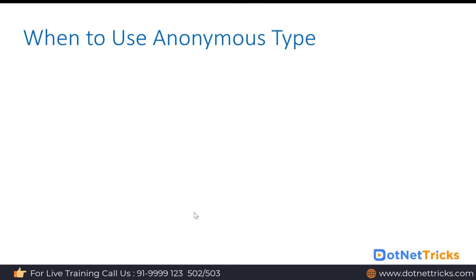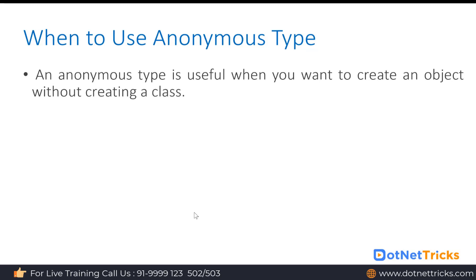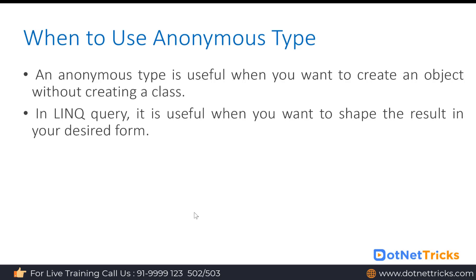When to use anonymous type? Anonymous type is useful whenever you are going to create a single object without creating a class. That means you're not going to create multiple objects and you're not willing to reuse the structure of that class. This is the common practice when we use the LINQ query — to whatever result set we get from the backend, we provide a shape using anonymous type.